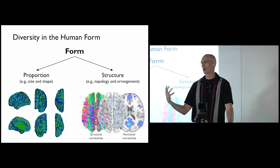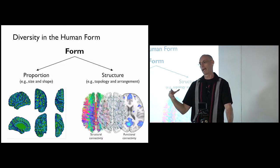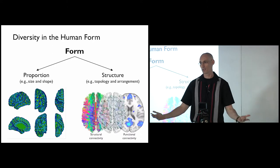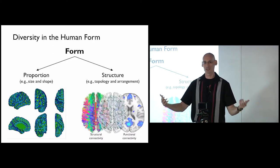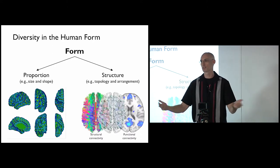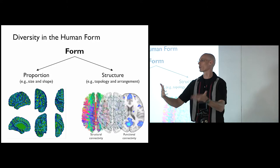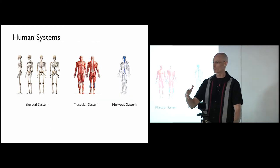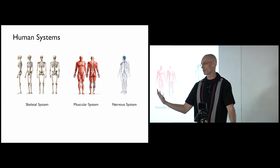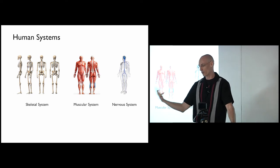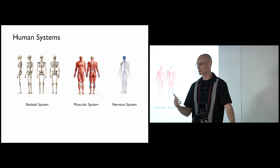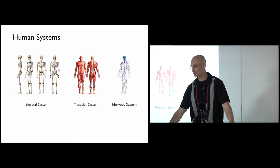This approach hasn't been done as much for general anatomy — looking at bones, muscles, nerves, and things like that. We're thinking about how to connect the brain with the rest of the body, because we're really just a complex system of systems, or network of networks. So we've started with three human systems: the skeletal system (the bones), the muscles, and the peripheral nerves.